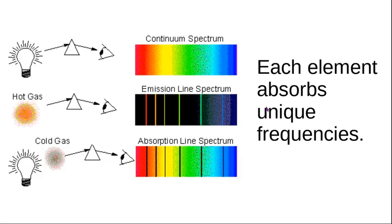Every element has its own unique spectrum. To get a continuous spectrum, you have white light going through a prism and you end up with the rainbow. If you have a hot gas and put it through a prism or diffraction element, you will see specific colors of light emitted. But if bright white light goes through a cold gas and you look at it, you will see some lines have been absorbed — they are now missing.